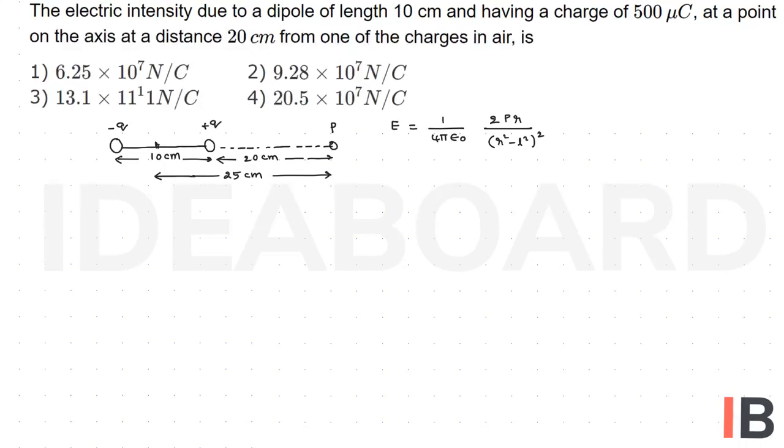Where P is equal to the dipole moment, which is nothing but the product of charge into separation. The charge is 500 micro coulomb, that is 500 into 10 power minus 6.